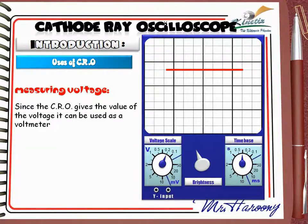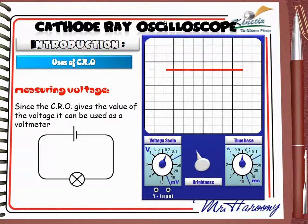يعني لو عندي السيركت اللي قدامي وعايز أقيس الفولتج الخاص باللمبة، بوصل اللمبة بالـ Y inputs. بكل بساطة أصبح جهاز الـ CRO يعمل كـ voltmeter. دي هي استخدامات جهاز الـ CRO ومقدمة عن التعامل مع الواجهة الرئيسية.